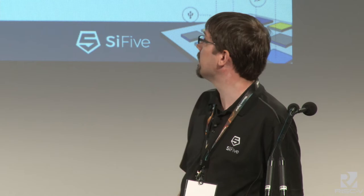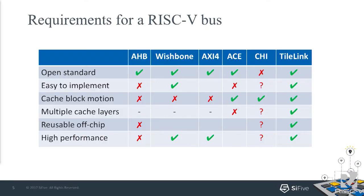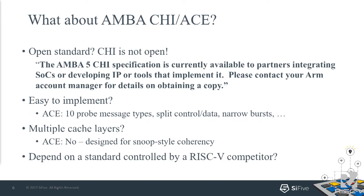AXI4 is in a similar boat, with the additional downside of being from a competitor who probably doesn't like RISC-V. ACE at least has some coherency, but it's not really clear how you do multiple levels of cache with that protocol. And you can't use it off-chip, which is something we would want to do longer term. And finally, there's the CHI spec from ARM. They claim it's open, but this is what I see in the last two years when I've tried to get it from their website. So it's not really clear whether it even meets our needs, because you can't get the spec. Is that an open standard? I would say no.